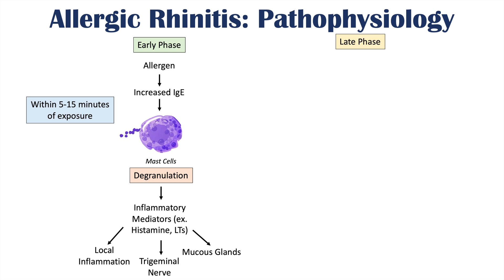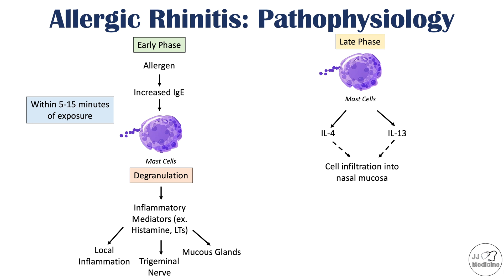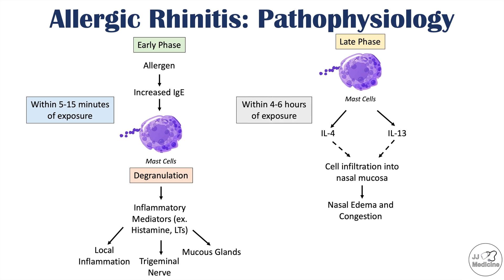In the late phase of allergic rhinitis, mast cells release other cytokines including interleukins — particularly interleukin-4 and interleukin-13. These interleukins lead to cell migration and infiltration into the nasal mucosa, including eosinophils, causing nasal edema and congestion. All of this takes place within 4 to 6 hours of exposure, in contrast to the early phase which occurs more rapidly.